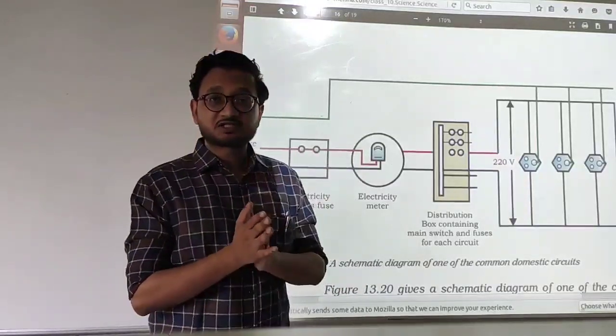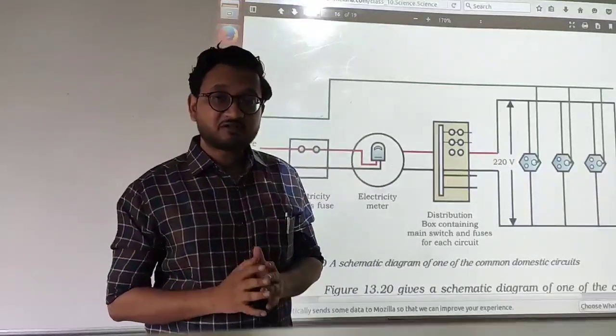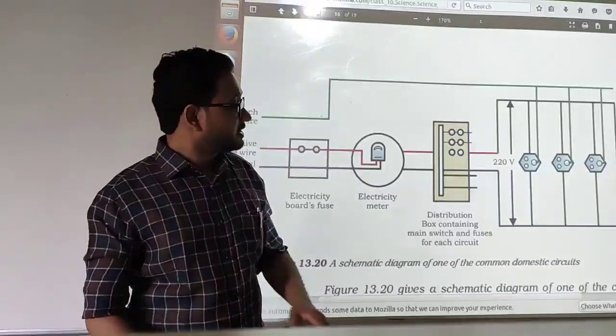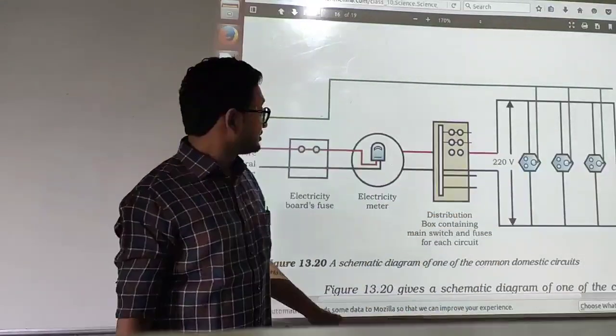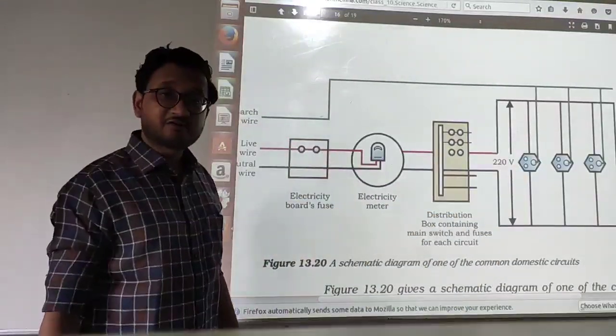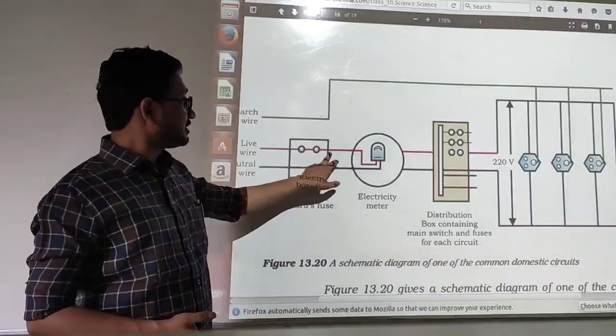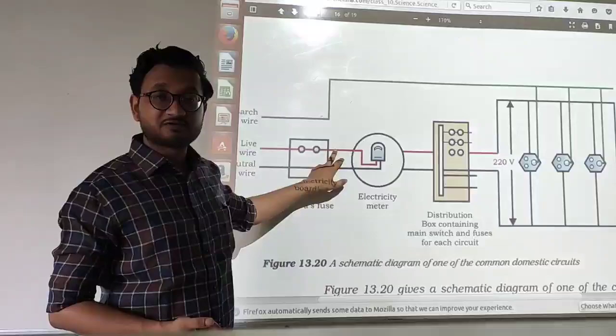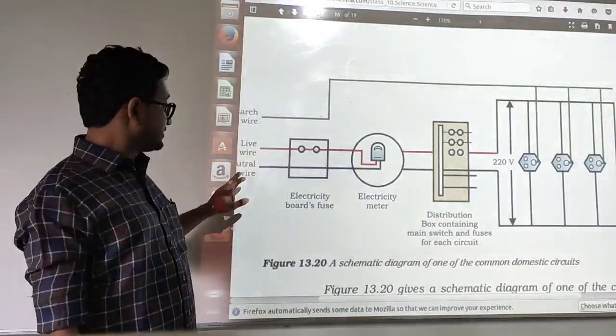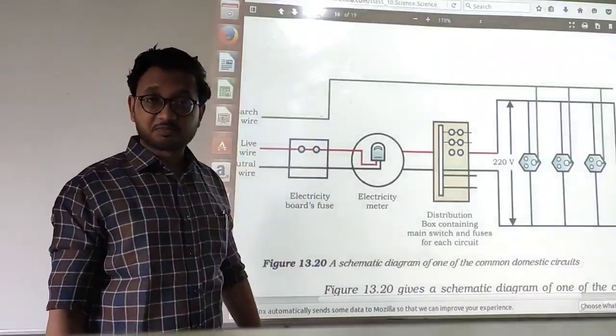All the appliances are made in such a way that they require potential difference of 220 volts and they are connected in parallel. Look at this for example, in AC current we have the line for the live wire, this one, live wire that is the one which is carrying positive terminal and this is neutral wire that is negative terminal.